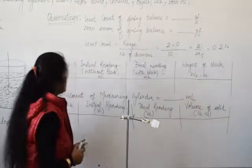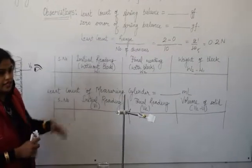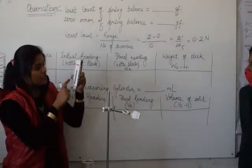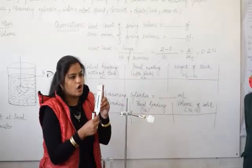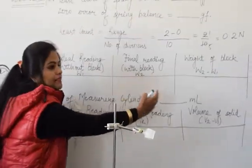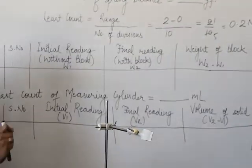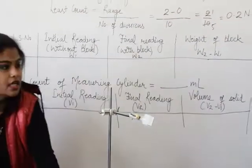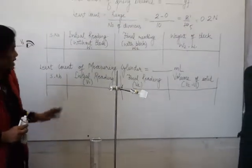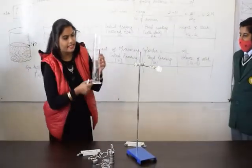This side it is in gram also. Then observation table you can see. Serial number, initial reading. First of all we will see initial reading, it is at zero. Initial reading will be zero. Then we will hang some object here. Then we will see the final reading. And then we will calculate by subtracting W2 minus W1. It will be the weight of that block. And then we will immerse our object in this liquid.